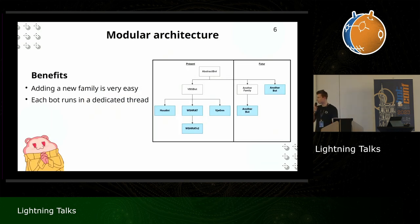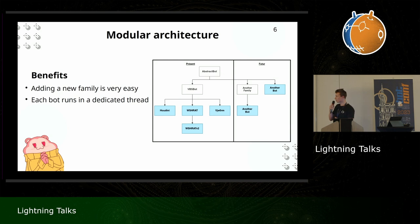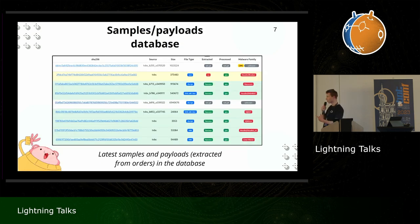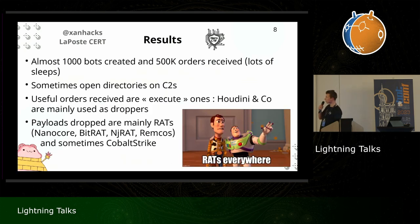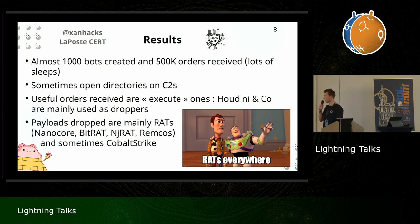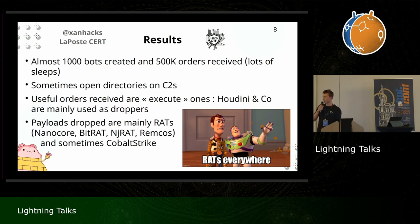With a list of C2 URLs and user agents, we create fake bots to gather recent orders from the C2 and collect many payloads. We built a modular Python application where each class implements functions to respond to C2 orders, and we have inheritance relationships — for example, WSHRAT V2 inherits from WSHRAT V1. As a result, we have almost 1,000 bots and lots of orders. Sometimes when opening C2 URLs in a browser, we find open directories containing lots of text files and other things. The most useful orders are execute ones — they mainly contain other WSHRATs, Nanocore, BitRAT, AsyncRAT, RemCos, and sometimes more advanced payloads like Cobalt Strike.